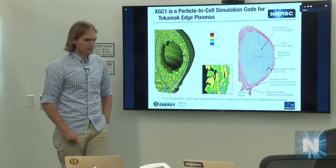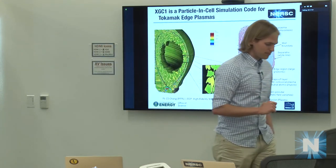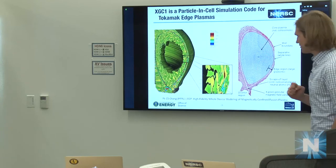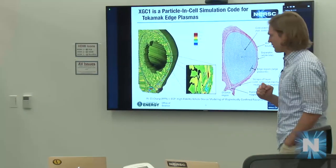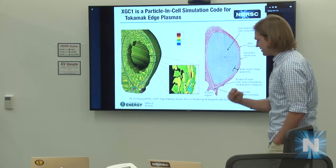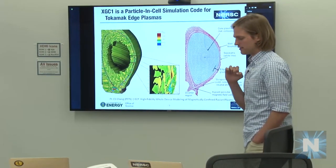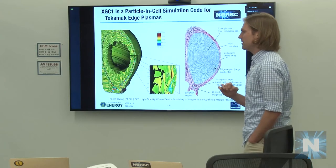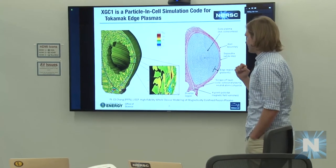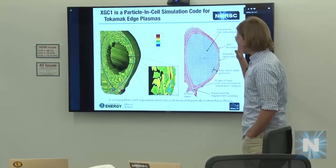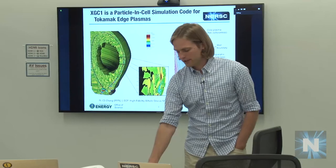What is challenging about this approach is that you cannot play certain tricks with the magnetic geometry that people have been doing for a long time. XGC1 uses a Cartesian coordinate system and an unstructured mesh, which lets it resolve the electromagnetic fields in the whole domain.